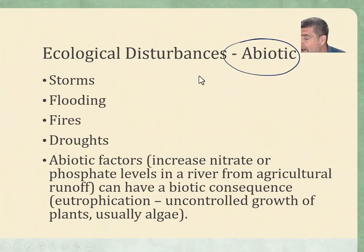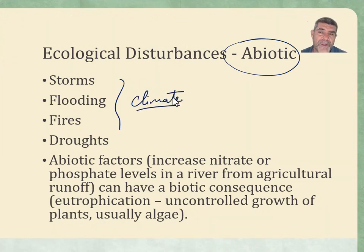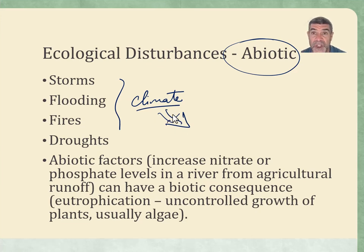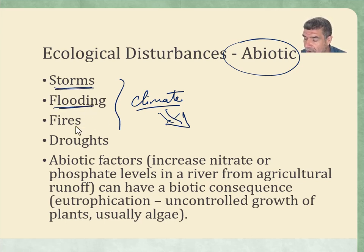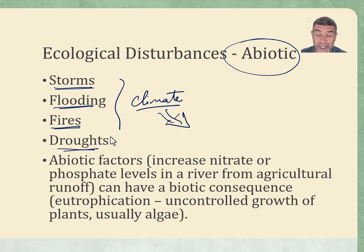When we talk about the abiotic factors, some of the non-living components, some of those are associated with the climate and what sort of impact these sorts of changes are having. As we study climate science and recognize that there have been some changes, we also notice things like the frequency and severity of storms, floods, fires and droughts, and the impact that each of these is having — not just individually, but cumulatively over time — to the different types of natural environments that we see around us.